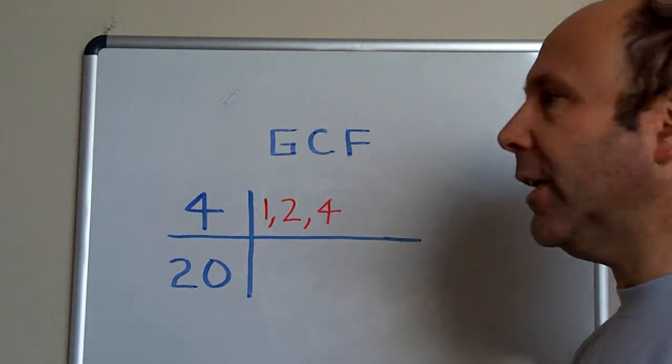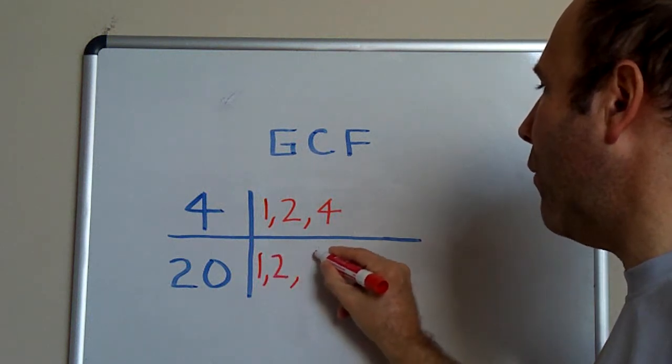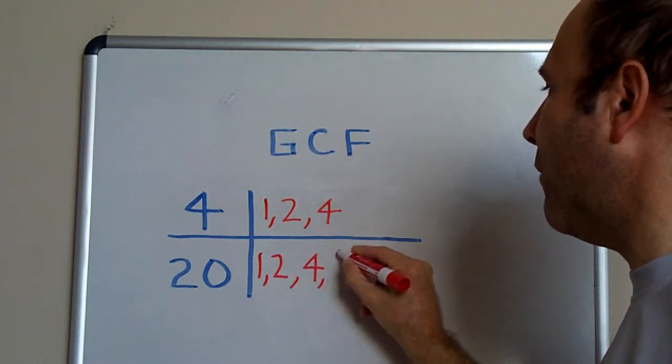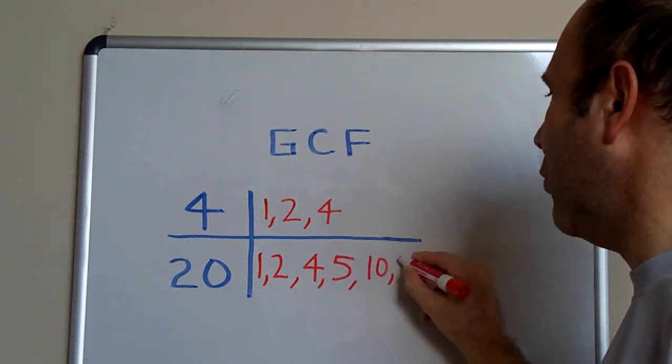The factors for 20 will be 1, 2, 4, 5, 10, and 20.